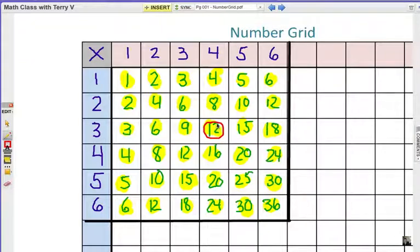Alright, what I want you to do is notice first of all what column it's in, so that would be four, and then what row it's in, and this would be three. So, the number 12 is a four times three multiplication fact. We're going to take this row number up here, this top number first, and we'll try to stick to that pattern.